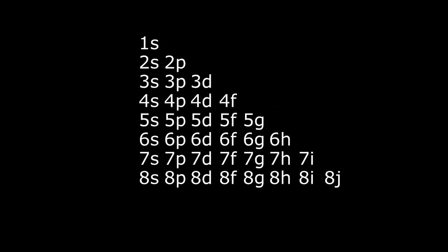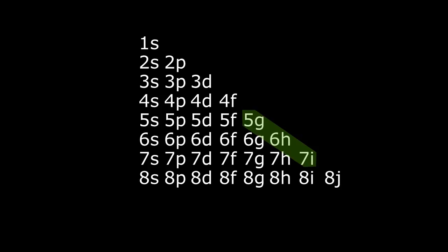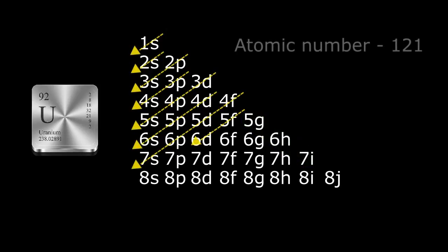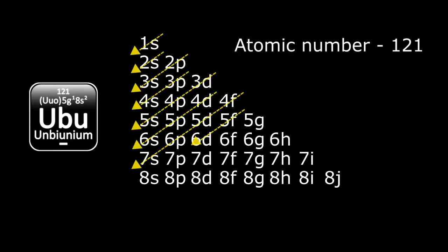Looking at our table, we can see where the orbitals of the G, H, and I subshells would begin to fill in shells 5, 6, and 7 respectively. But no known naturally occurring element is stable enough to have electrons in the G or higher subshells, with the electron configuration of our heaviest known element uranium filling the D subshell of shell 6. The first element predicted to utilize the G subshell would have an atomic number of 121, the hypothetical element unbiunium, with the symbol UBU and predicted electron configuration of [Og] 8s², 5g¹.